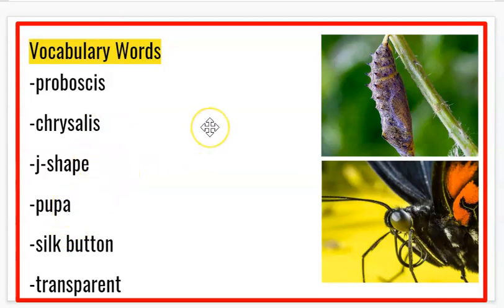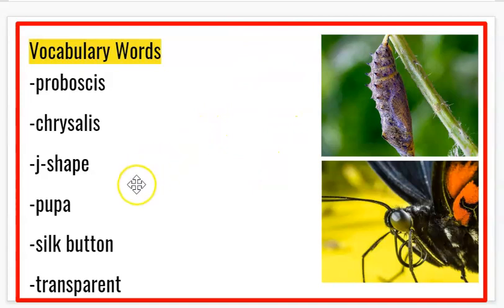J-shape is the shape that a caterpillar forms right before it is going to go into a chrysalis. The caterpillar stops eating, it gets really slow, and then all of a sudden it forms a J-shape, and then the chrysalis starts to grow.